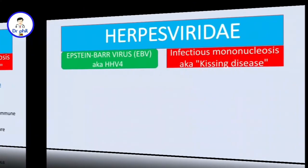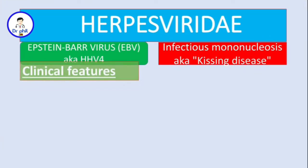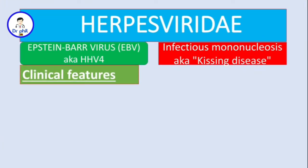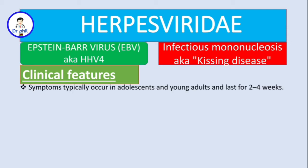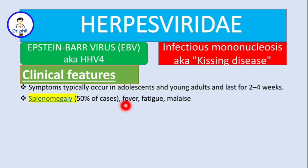This infection is asymptomatic especially in children. Symptoms typically occur in adolescents and young adults and last for two to four weeks. The main symptoms include splenomegaly, which occurs in 50% of cases, accompanied by fever, fatigue, and malaise.